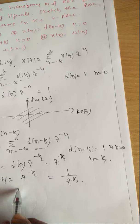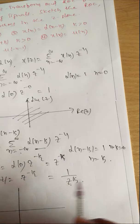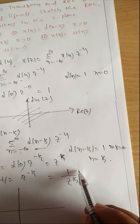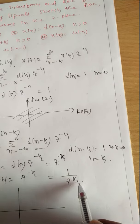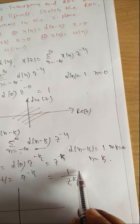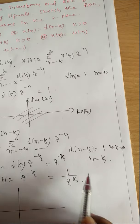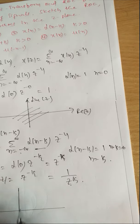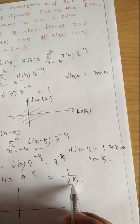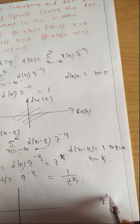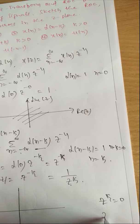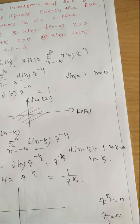The numerator polynomial roots are called zeros and denominator polynomial roots are called poles. The numerator does not have any zeros here. The denominator has Z^k, so poles are found from Z^k = 0, giving Z = 0. It has k number of poles at Z = 0. For example, if Z^2 = 0, you get two poles, both at zero.